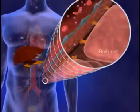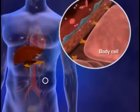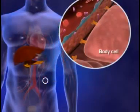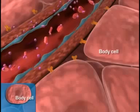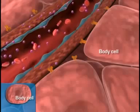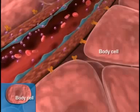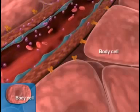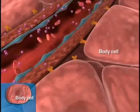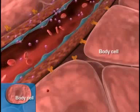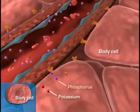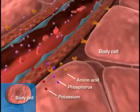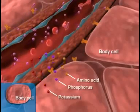Unable to utilize the blood glucose, the insulin-deprived cells, starved for energy, begin to metabolize protein. This leads to the loss of intracellular potassium and phosphorus and to excessive liberation of amino acids.